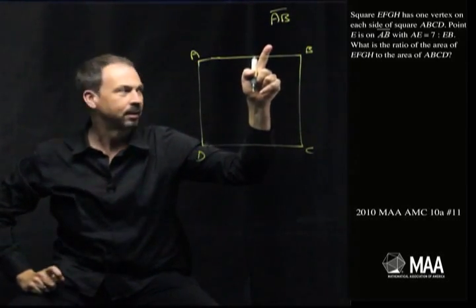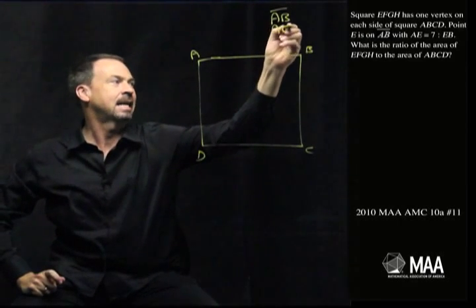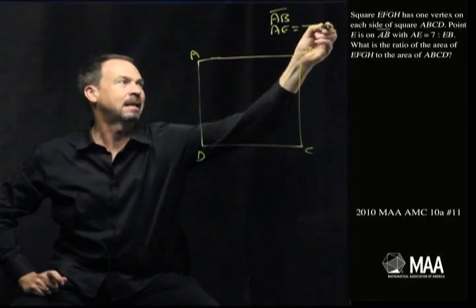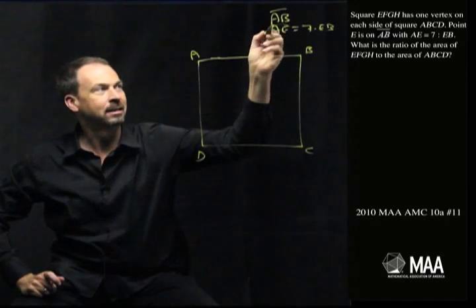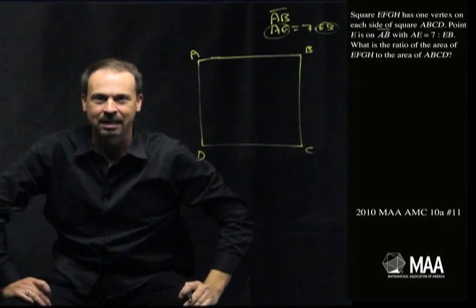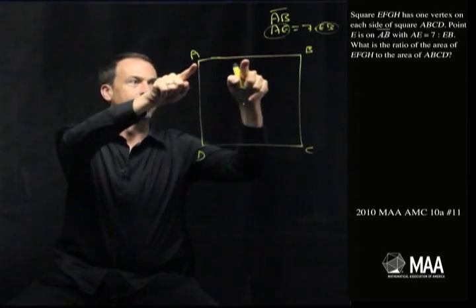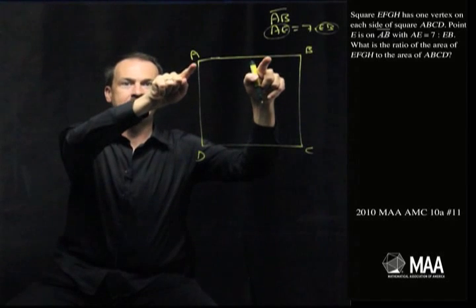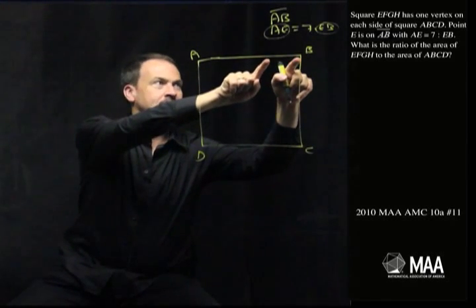But before I draw it, there's some extra information about it. It says that AE is 7 times EB. All right, that is the distance twixt A and E is 7 times the distance twixt E and B. So E is going to be somewhere along here with this distance between A and E 7 times as big between this distance E and B.